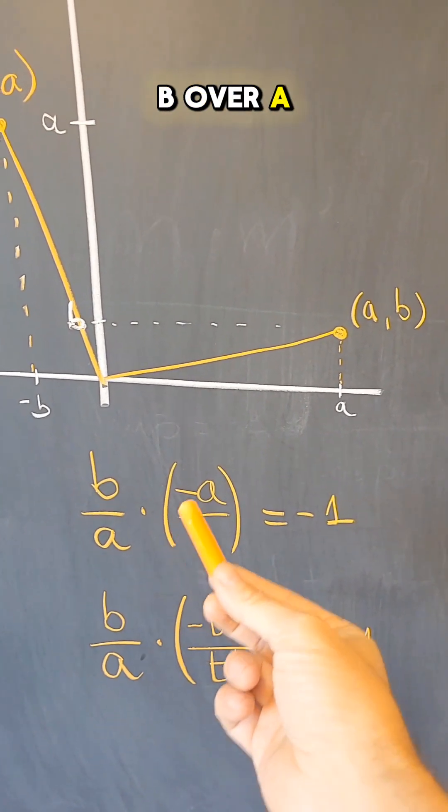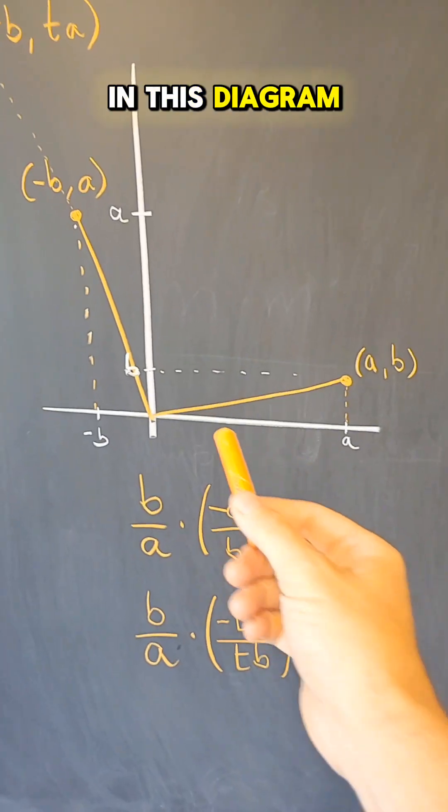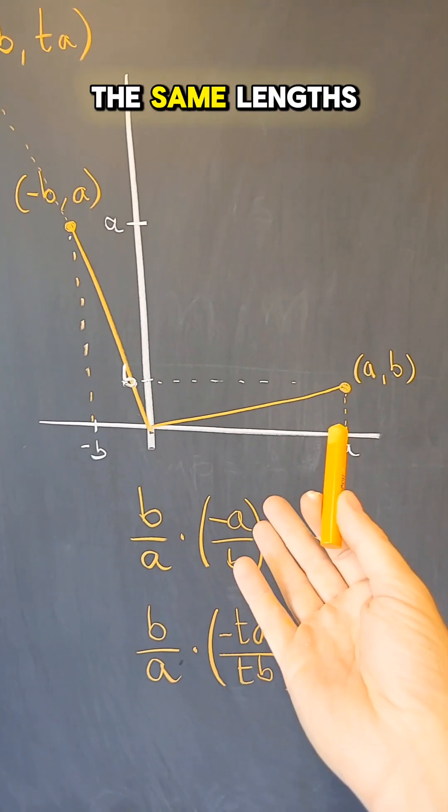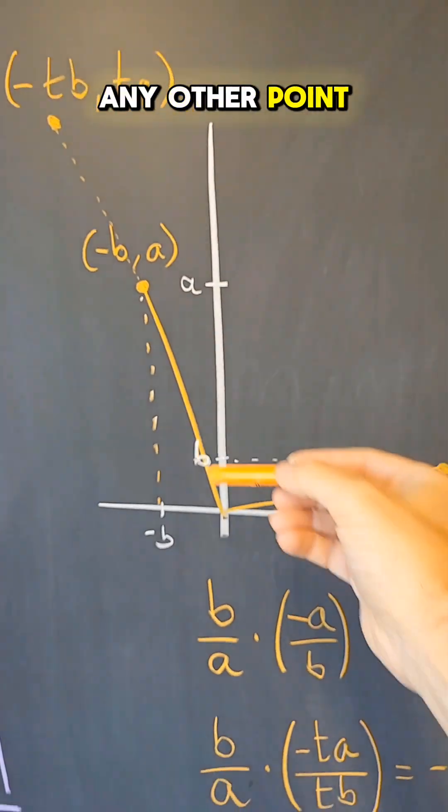So the slope b over a times minus a over b is equal to minus 1. In this diagram, this segment and that segment have the same lengths, but that doesn't need to be the case.